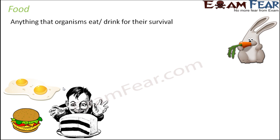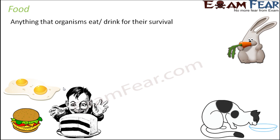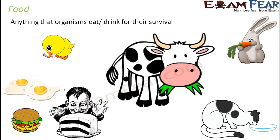Food is needed for the survival of all organisms. Think of a cat — its favorite food could be milk. A rabbit's favorite food could be a carrot. Birds might eat seeds or small insects. A cow could be eating plants or leaves.